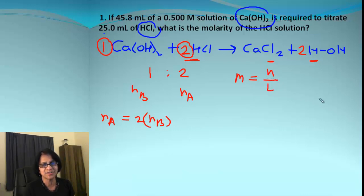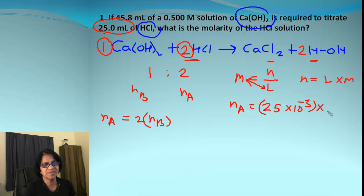Let's get n_A and n_B values. n_A will be the volume in liters. We have 25 mL, so it will be 25 × 10^-3 times molarity for acid, which we don't know, so let's put that as M.